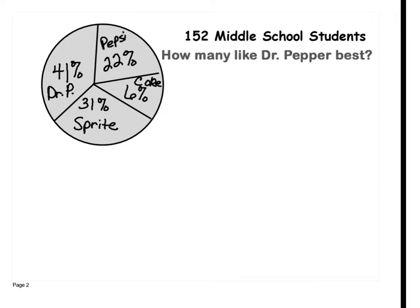Draw this and write up the question. This is 152 middle school students who were surveyed. These are the results: 41% like Dr. Pepper, 31% like Sprite, 6% like Coke, and 22% like Pepsi. You can see the majority like Dr. Pepper — it's 41%, and it's also the largest section of that circle. It helps you see with your eyes how many people like Dr. Pepper, like the percentage, what was the popular one.